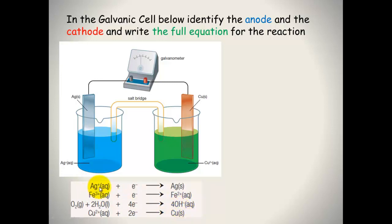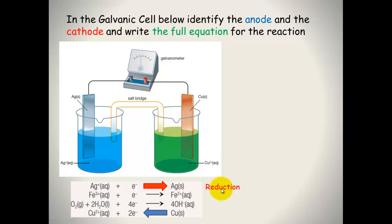Remember, something on the top left hand side needs to react with something on the bottom right hand side. We have silver ions and we have copper solid. So the top reaction will go in a forwards direction and the bottom reaction will go in the backwards direction. Silver ions will react to form silver solid — that's a reduction reaction because it's gaining electrons. Copper solid will break down to copper ions plus two electrons — this is oxidation because it's producing electrons.